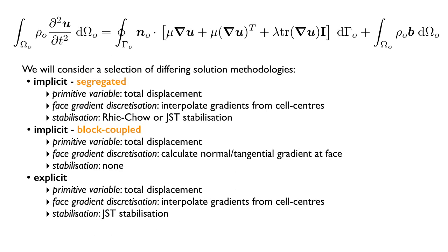There's a lot of choices I could make to create a variety of these different approaches. The form I've taken here is, I'm assuming we're solving for total displacement in all of them. In the segregated approach, I'm assuming the gradients are interpolated from the cell-centers to the faces. Whereas in the block-coupled, I'm going to calculate the gradients directly at the faces. I could use stabilization, either Rhie-Chow or JST. For the block-coupled, as I'm calculating the gradients directly at the faces, I won't use any stabilization. For the explicit, I'm doing something similar.